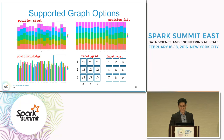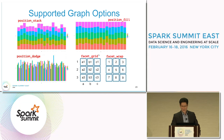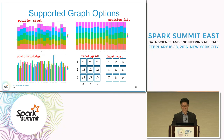With two facet-related options—facet_grid and facet_wrap—you can lay out multiple sub-graphs in two dimensions for a graph display.